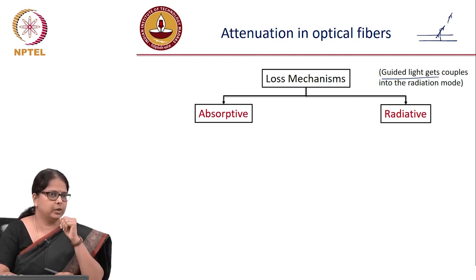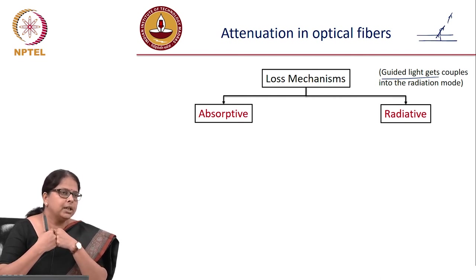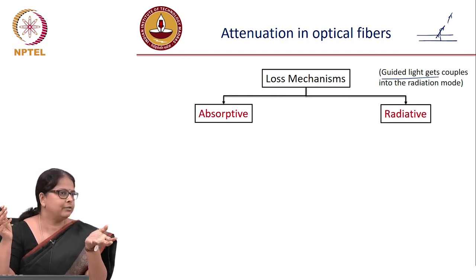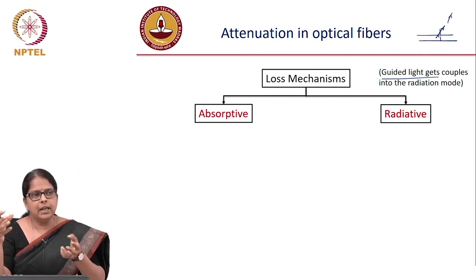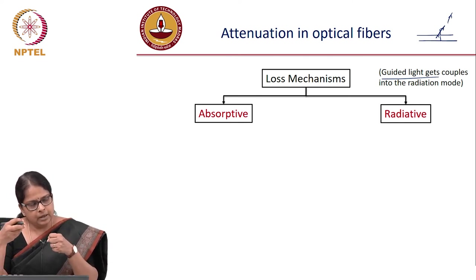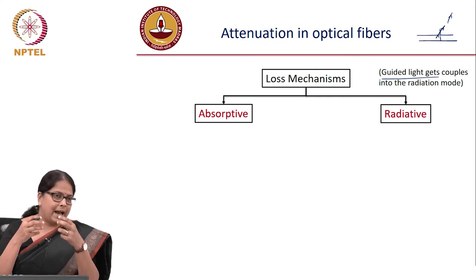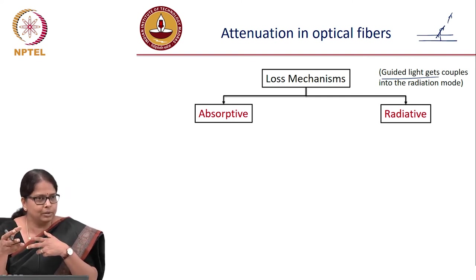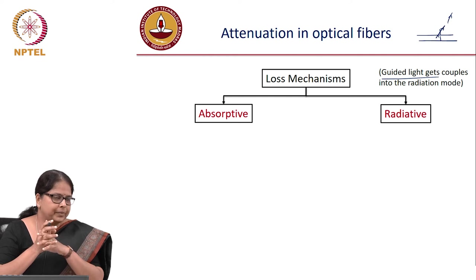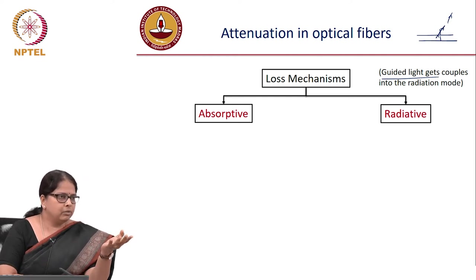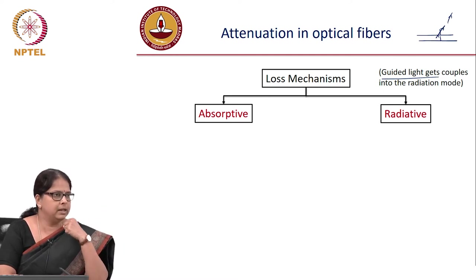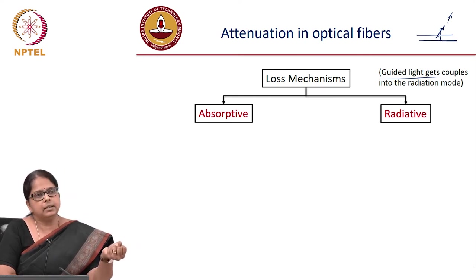SiO2 has absorption in the infrared wavelength range, which is what we use for communication. You must be careful to avoid infrared wavelengths near the resonant frequency of SiO2 bonds. Both atomic and molecular resonances must be avoided. Additionally, impurities introduced during fiber fabrication — from dopants or the fabrication process — will also result in absorption loss.